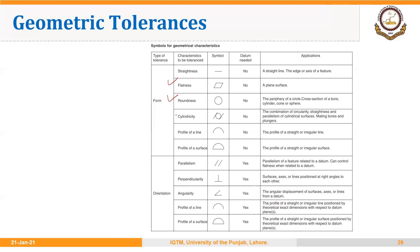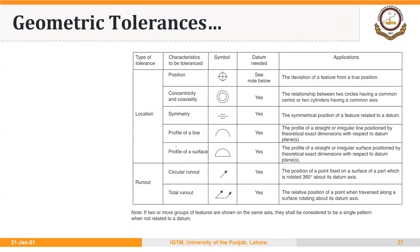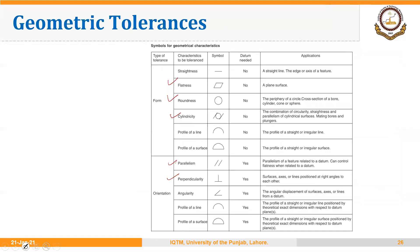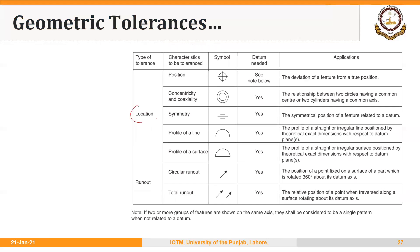Examples of geometric features include straightness, flatness, roundness, cylindricity, parallelism, and perpendicularity, as well as features of position, runout, and others. These geometric tolerances are grouped into different categories: geometric features of form, geometric features of orientation, geometric features of location, and geometric features of runout.